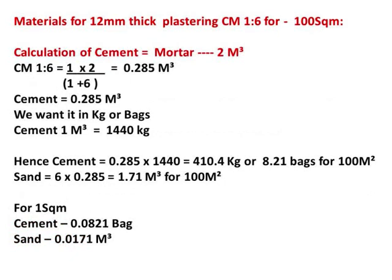We have already calculated the dry mix requirement for 12 mm thick plastering for 100 square meters as 2 cubic meters. This includes the actual quantity plus 30% extra for uneven surfaces plus 25% extra for dry mortar. Now we calculate materials for 100 square meters, cement mortar 1:6, 12 mm thickness. The total dry volume is 2 cubic meters.